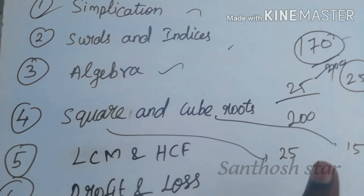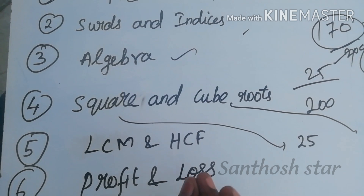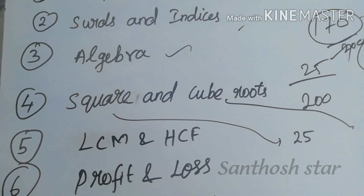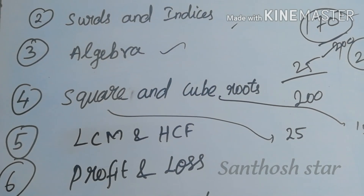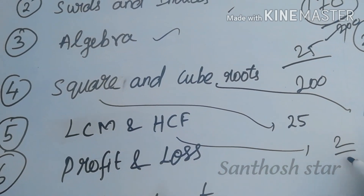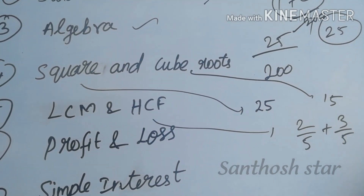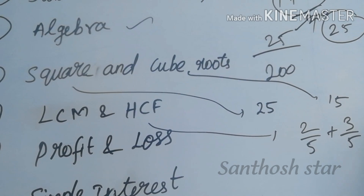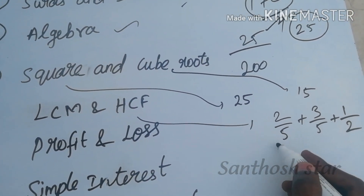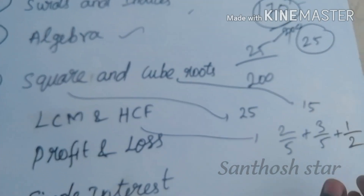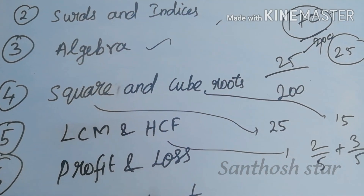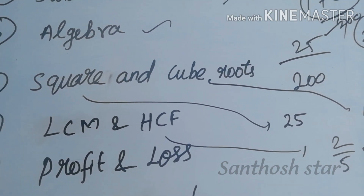Now let's see how easy we can do it. Next: LCM and HCF. How do we learn LCM and HCF? Simplification — we can do it: 2 by 5 plus 3 by 5. This number we can simplify: 1 by 2. This is the value. First we need LCM. We can do it.